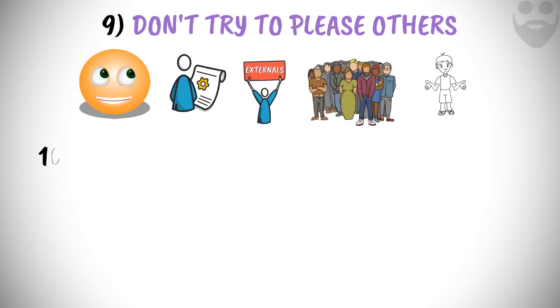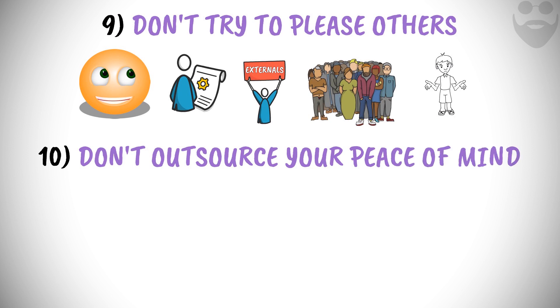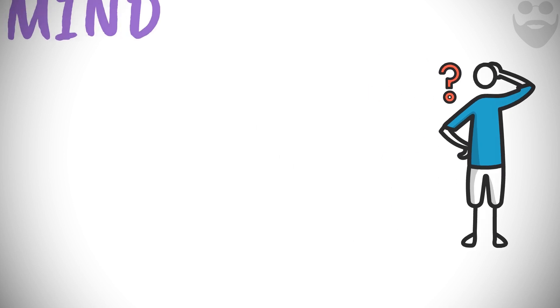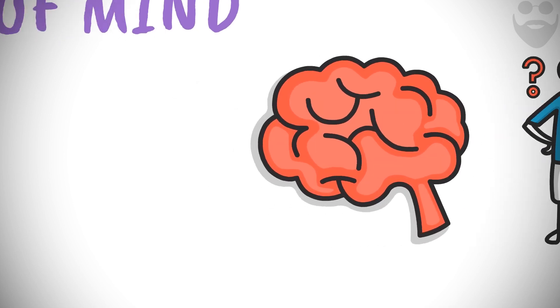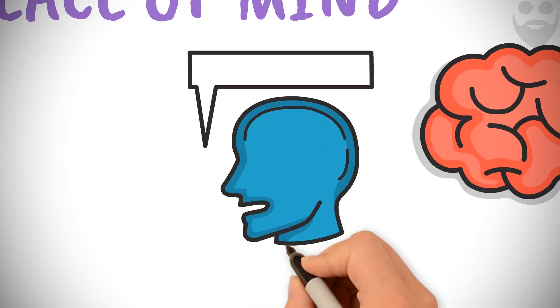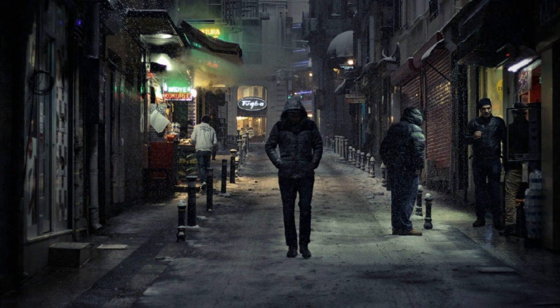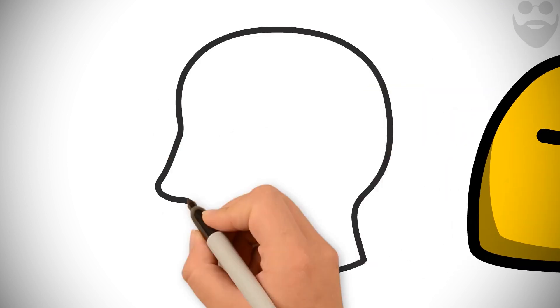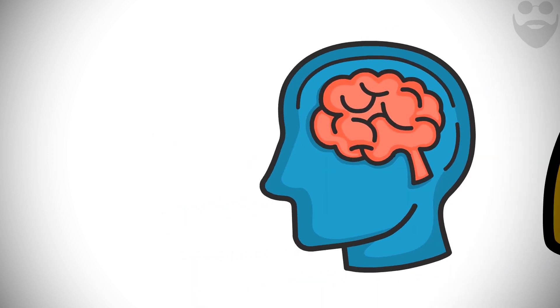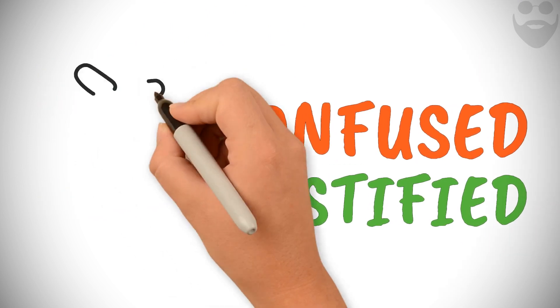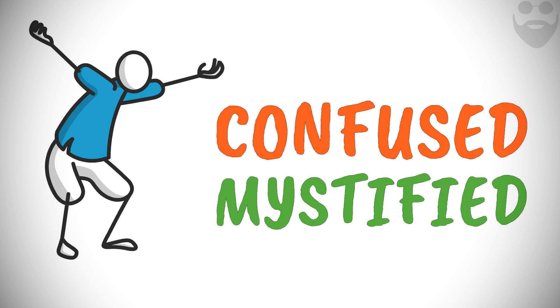10. Don't outsource your peace of mind. Are you wondering, what does it mean to outsource your peace of mind? Well, attentively listen to these words of Epictetus. If a person gave your body to any stranger he met on his way, you would certainly be angry. And do you feel no shame in handing over your own mind to be confused and mystified by anyone who happens to verbally attack you? Enchiridion 28.